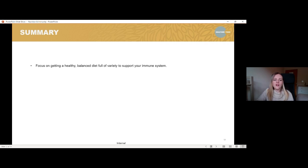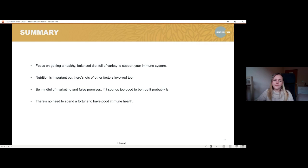OK, so that's it for me today. So just to summarize, it's really important to focus on getting a healthy balanced diet which is full of variety to support your immune system. That's the best thing that we can do as well as just thinking a little bit about those other factors as well. Nutrition is important but again, there's lots of other things that we can think about and that we can incorporate into our lifestyle to help our immune system to work at its best. Be mindful of marketing and false promises because if it sounds too good to be true it probably is. Try and remember that there's no one thing that's going to make us better. There's no one thing that's going to protect us from being unwell. There's no need to spend a fortune to have a good immune health either. So it should be accessible to everybody. So just try and think about that Eat Well Guide, try and get the balance that you can and then you should be in a really good position.